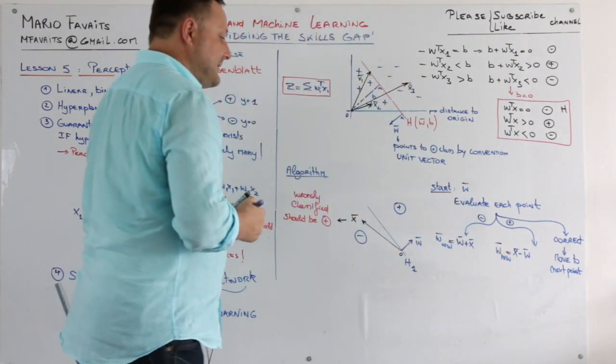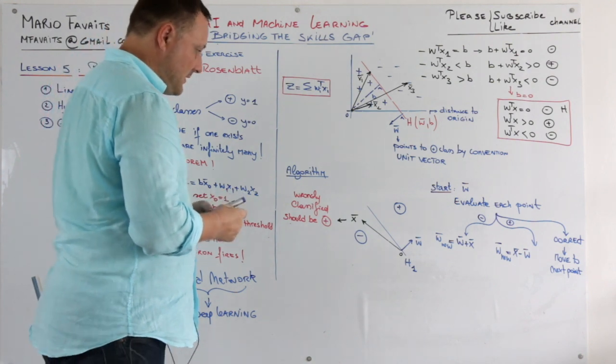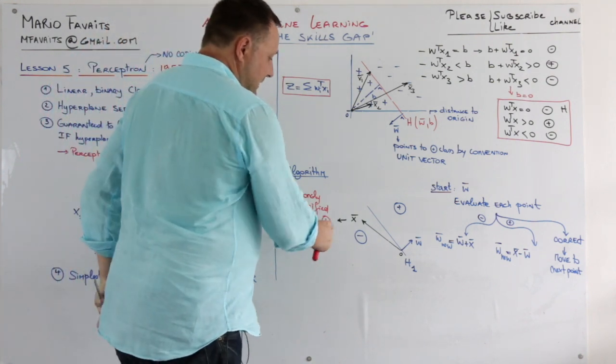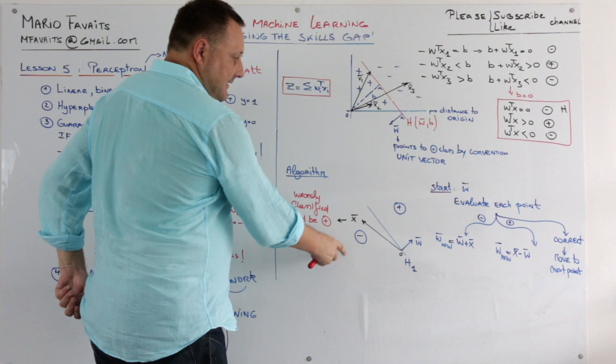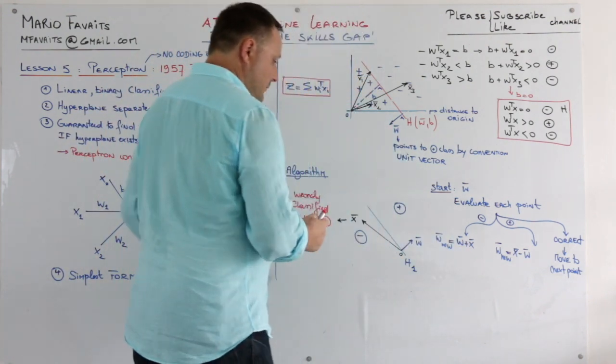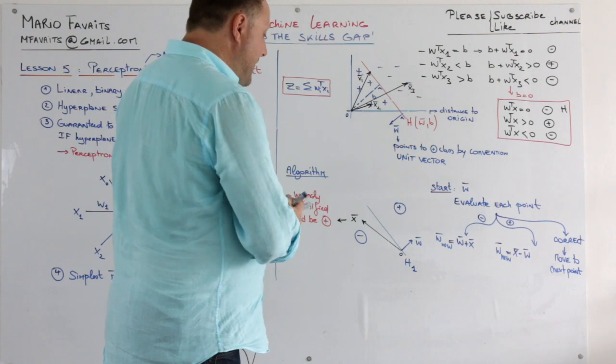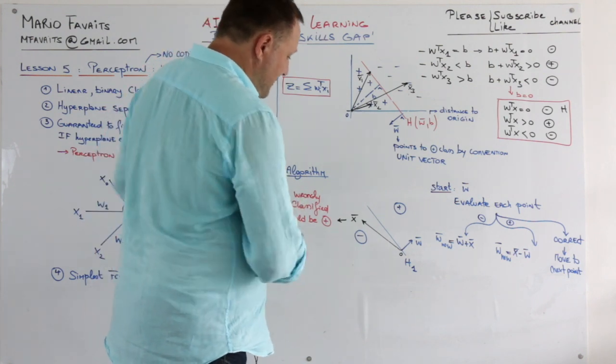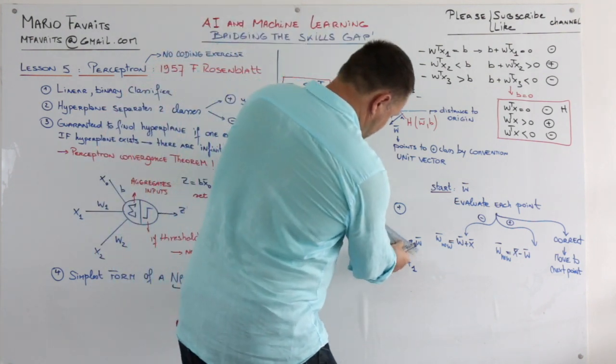Okay? So in this case, let's take a look. X should actually be positive and it is in the negative class. So we're in this scenario here. So what we need to do, we need to add X to W. We know how to add vectors.